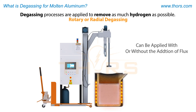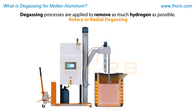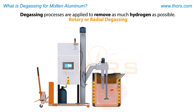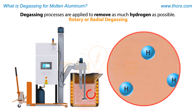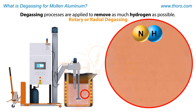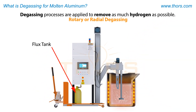Rotary degassing involves inserting a rotating hollow shaft with a specially designed impeller into the melt. Inert gases are injected through the rotating shaft to collect the hydrogen and carry it to the melt surface. Fluxes can also be injected, which help carry inclusions out of the melt along with the hydrogen.